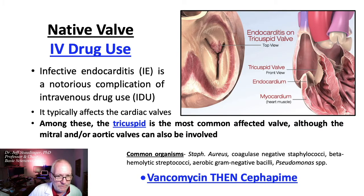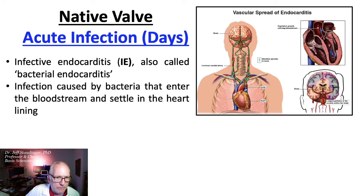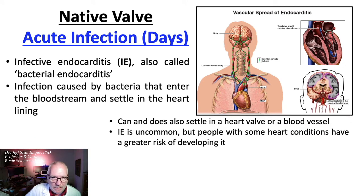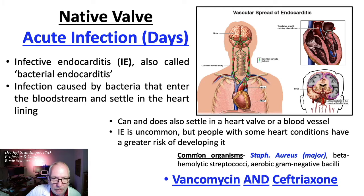Antibiotic treatment includes vancomycin followed by cefepime. Native valve acute infection, having occurred in days, is also called bacterial endocarditis. It's an infection caused by bacteria that enter the bloodstream and settle in the heart lining, a valve, or a blood vessel. This infection is uncommon, but people with some heart conditions have a greater risk. Common organisms include Staph aureus as the major infective organism, beta-hemolytic streptococci, and aerobic gram-negative bacilli. Treatment includes vancomycin plus ceftriaxone.